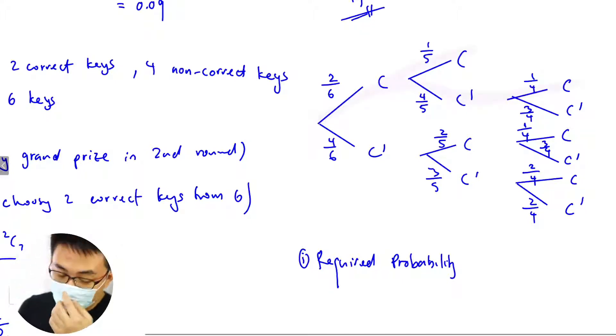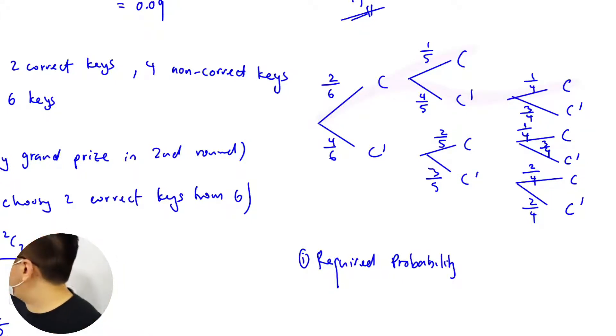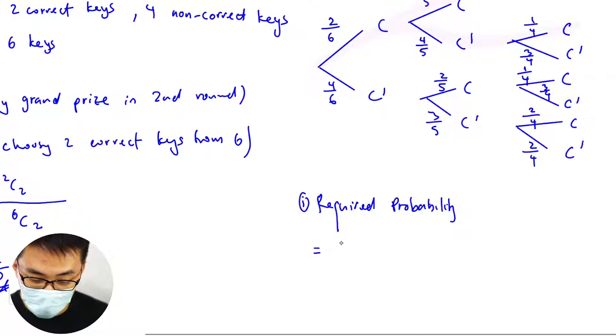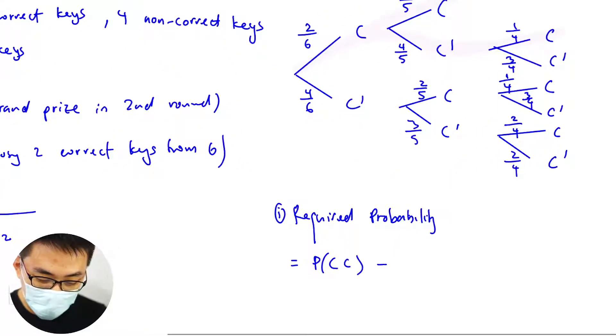Okay, so the required probability for the first part is just two. Okay, means you just need it to be the first round C, C plus P(C' ∩ C).